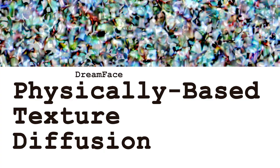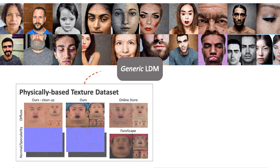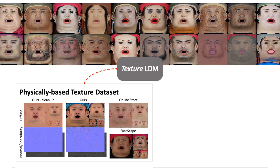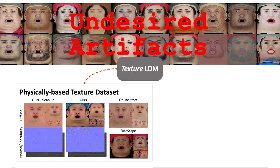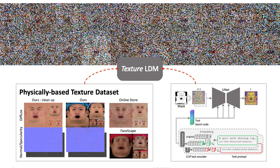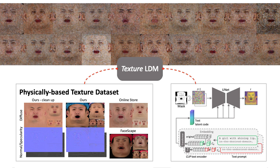In the Physically Based Texture Diffusion module, we first transfer the pre-trained stable diffusion to a large-scale texture map dataset that we collected. To ensure that the created texture map will not contain undesired features or lighting while still maintaining diversity, a prompt learning strategy was designed.